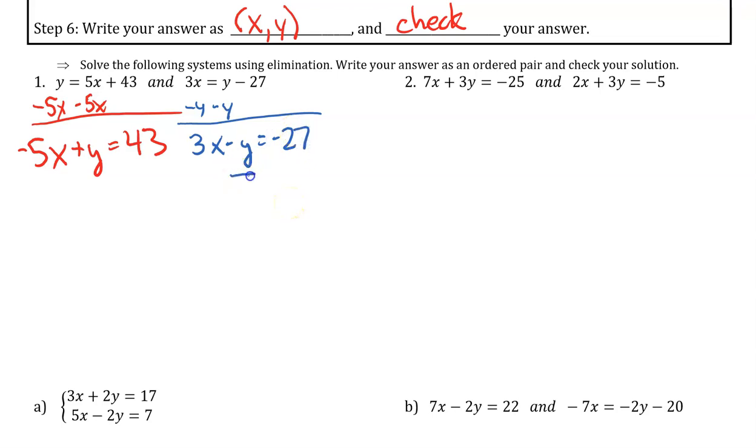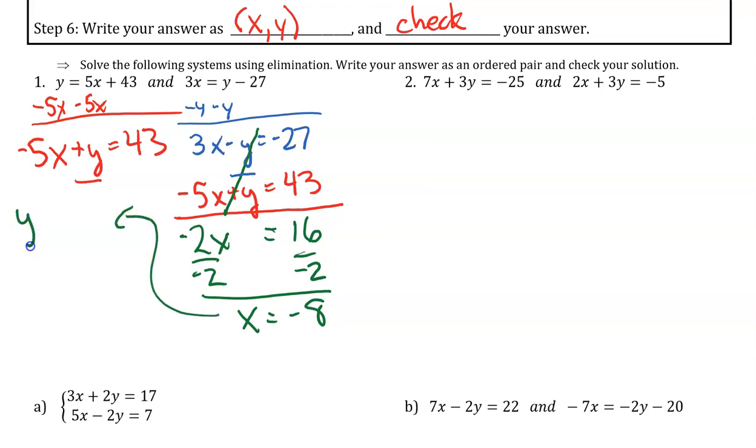Now I see I have a negative y in my second equation and a positive y in my first equation. So I'm going to write my first equation directly underneath of my second equation and I'm going to add the two equations together. 3x minus 5x is negative 2x. The y terms eliminate and that equals 16. Now I solve for x. Now I'm going to take that value and I'm going to go back up to one of my original equations. So I have y equals 5 times negative 8 plus 43. 5 times negative 8 is negative 40. Negative 40 plus 43 is 3.